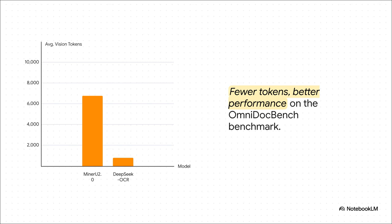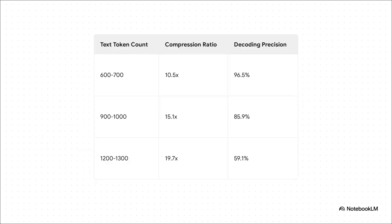I mean, just look at how it stacks up against other models. On a pretty tough benchmark, another model needed over 6,000 vision tokens to process a page. DeepSeek OCR, it got an even better result using fewer than 800. It's not just accurate. It's on a whole other level of efficiency. And what's really cool is this trade-off. You can see here, you can push the compression even further if you want. At 15x compression, you still get back almost 86% of the information. You can even go to a crazy 20x compression and still retain nearly 60%. The fact that the quality degrades so gracefully is incredibly promising.